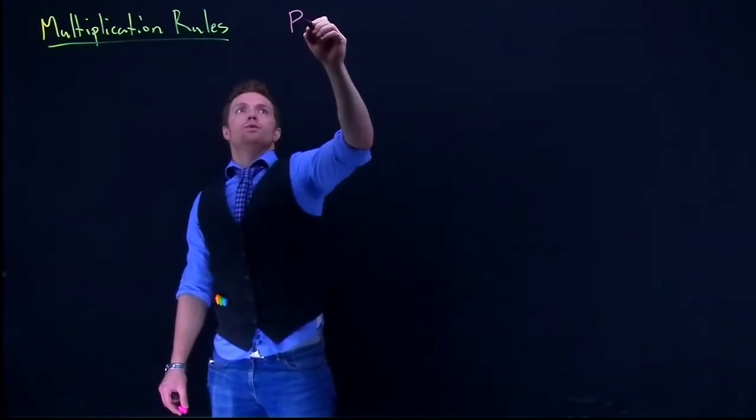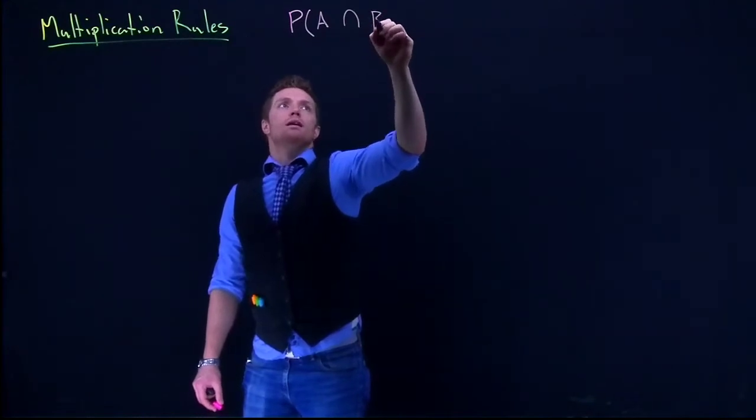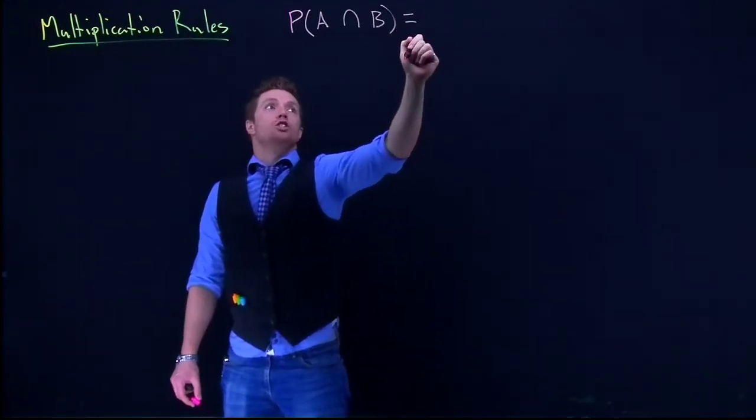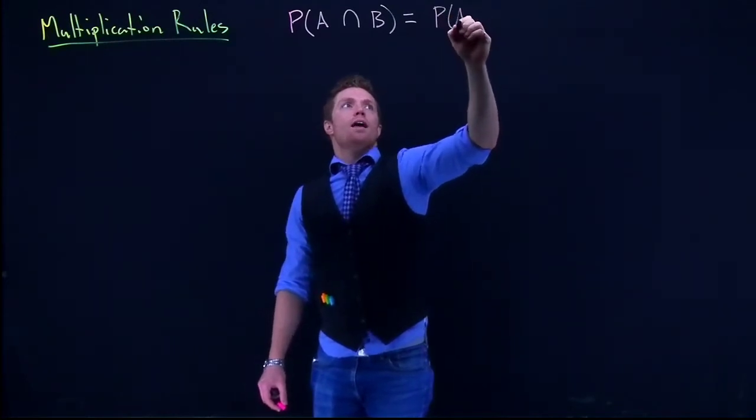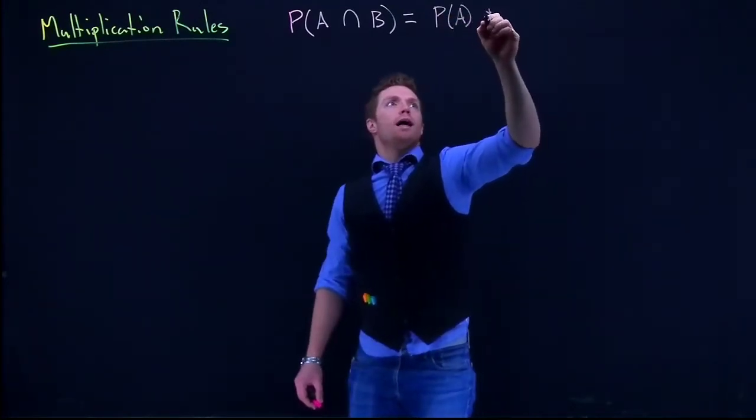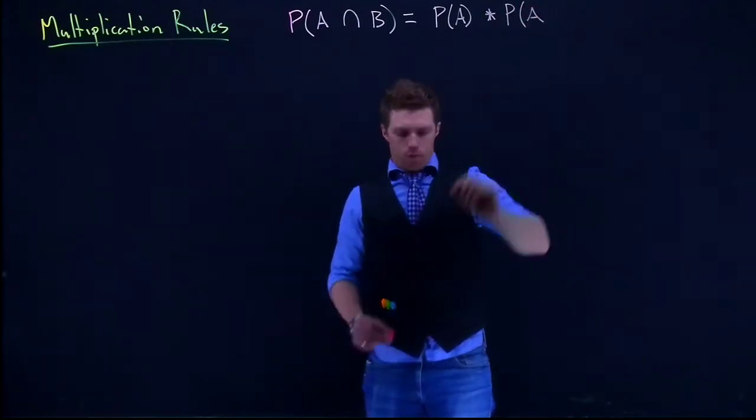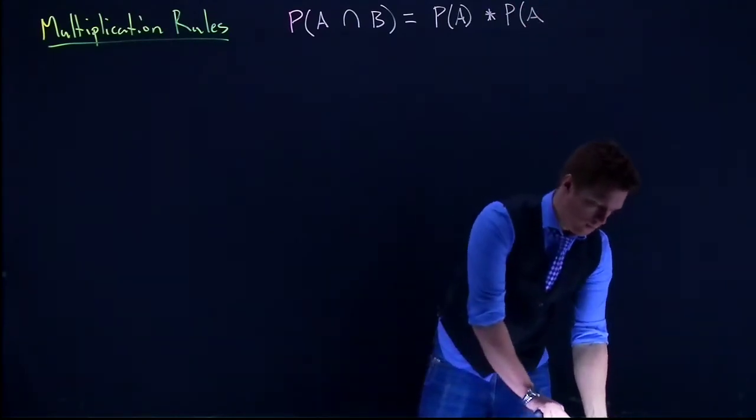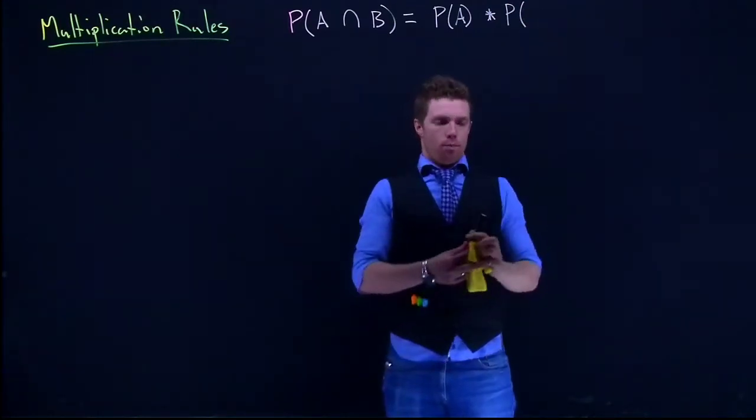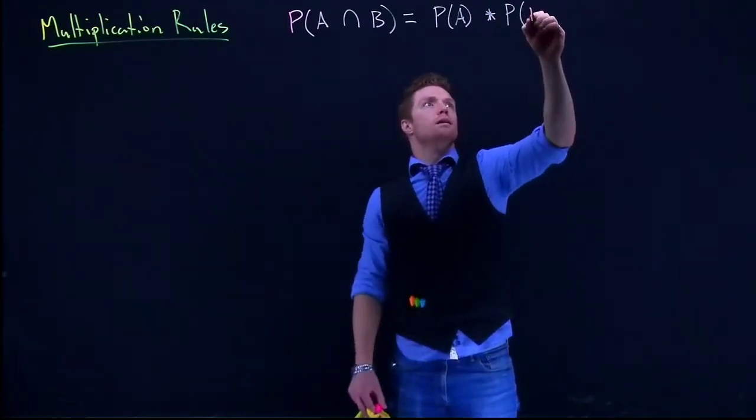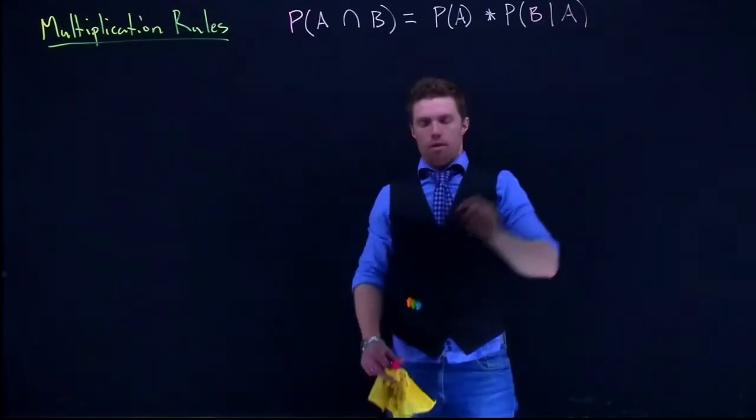Let's go ahead and do the probability of A and B. The generic one is that this is going to be the probability of A multiplied by the probability of B given that A has occurred.